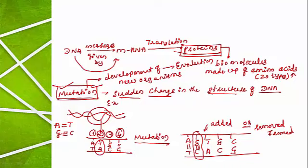So what are the main functions of DNA? It acts as genetic material, bringing messages from parents to offspring. The old DNA produces a new DNA molecule — this is called replication. From DNA, RNA molecules are synthesized — this is called transcription. DNA gives messages for the synthesis of proteins — this is called translation. Whenever the structure of DNA is suddenly changed, it is called mutation, and mutation is responsible for the development of new organisms through the process of evolution. Hope the explained part is clear for you. Thank you.